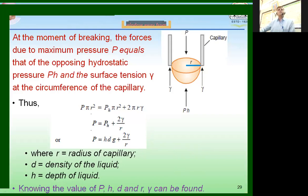So, putting these values into the equation or knowing the values of P, h, d and r that is the radius, simply, we can determine the surface tension.